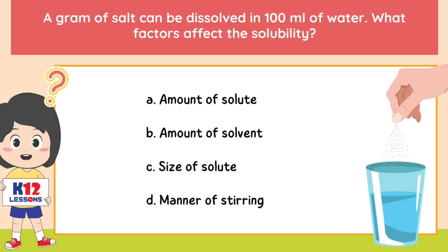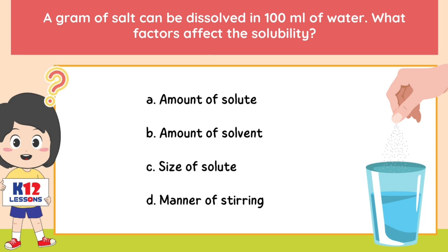A gram of salt can be dissolved in 100 milliliters of water. What factor affects the solubility? A. Amount of solute. B. Amount of solvent. C. Size of solute. D. Manner of stirring.